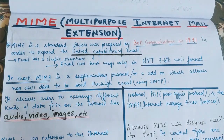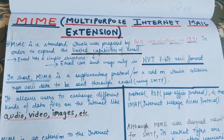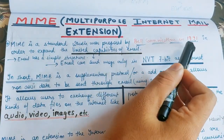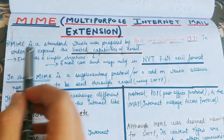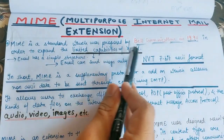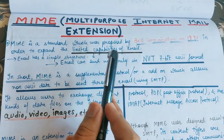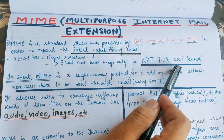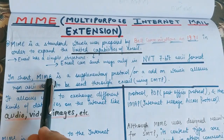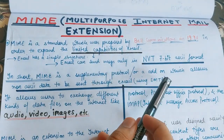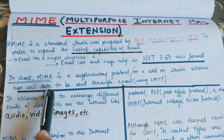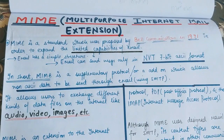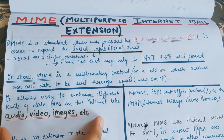Let us see some theoretical background. MIME is a standard that was proposed by Bell Communications in 1991, in order to expand the limited capabilities of email. In short, MIME is a supplementary protocol — an add-on — which allows non-ASCII data to be sent through email. Non-ASCII data can be your audio file, image file, and so on.